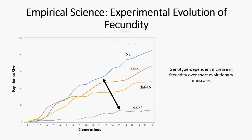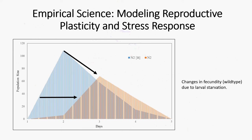We also have an empirical science component. One thing is experimental evolution of fecundity. We're comparing wild-type phenotypes with mutant genotypes, and we can see their population size over evolutionary time, looking at how certain traits evolve in different genotypic backgrounds. We can also look at reproductive plasticity with regard to stress — in this case, starvation stress in the larval stage. When larval worms get starved, they have a different profile than when they don't, and this is also true for different genetic backgrounds.